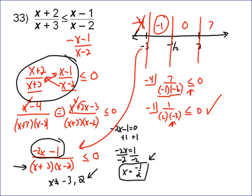If I put in 0, I get negative 2 times 0, which is 0. So negative 1. 0 plus 3 is 3. 0 minus 2 is negative 2. So negative 1 over negative 6 is a positive. A positive can never be less than 0. So 0 doesn't work.